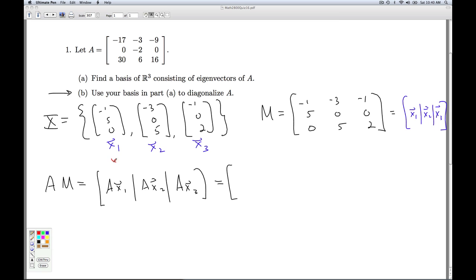That means that A x1 is just going to be negative 2 x1. This guy was also an eigenvector corresponding to lambda equals negative 2, so that's going to be negative 2 x2. This guy was an eigenvector corresponding to lambda equals 1, so that's just going to give me 1 x3.